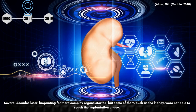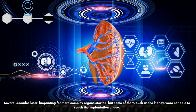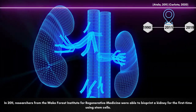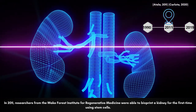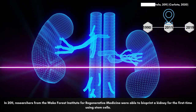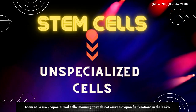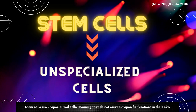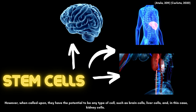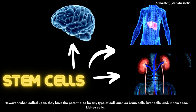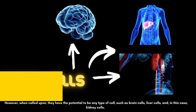In 2011, researchers from the Wake Forest Institute for Regenerative Medicine were able to bioprint a kidney for the first time using stem cells. Stem cells are unspecialized cells, meaning they do not carry out a specific function in the body. However, when called upon, they have the potential to become any type of cell, such as brain cells, liver cells, and in this case, kidney cells.